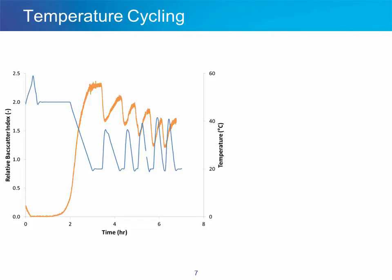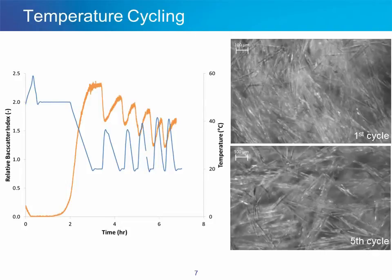In this example, we follow a temperature cycling event where at the end of a crystallization process the temperature is increased and decreased periodically. We can see the corresponding increase and decrease of the RBI signal as the crystals change their size, shape, and concentration. Comparing crystal images during the first cycle and the fifth cycle indicates that the crystal size has increased over time and the number of crystals has decreased — and this is tracked by the RBI trend.